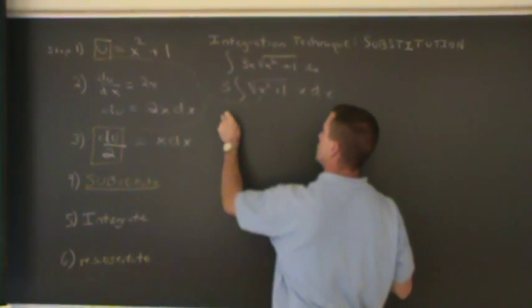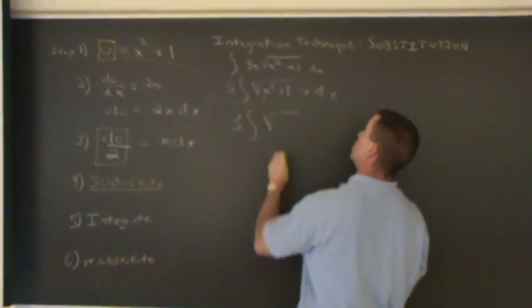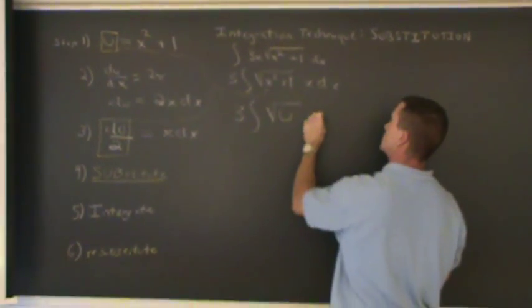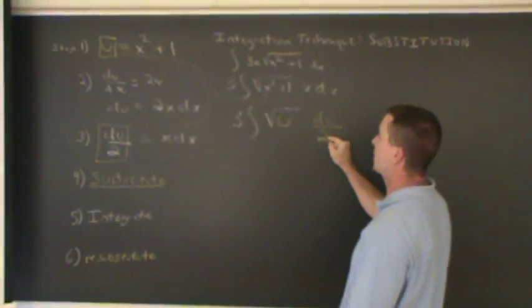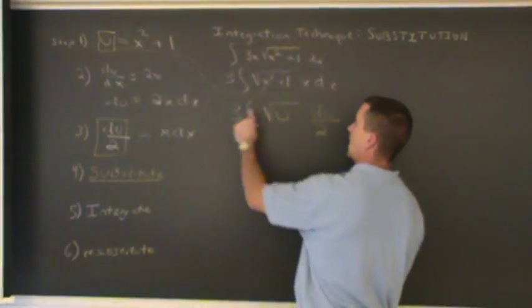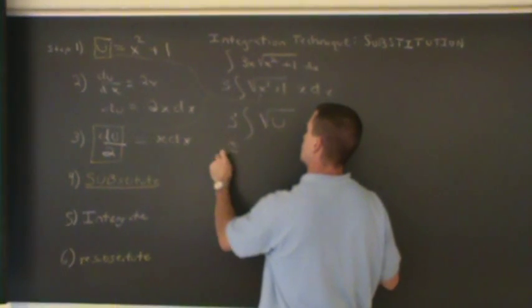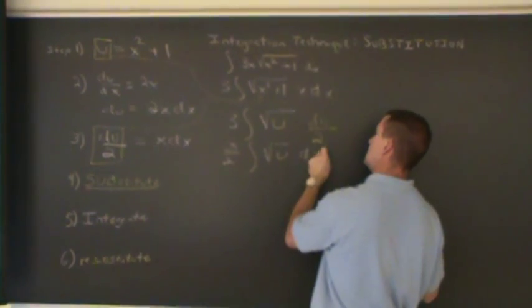And now we have three integral square root u, and we have du over 2. And this du over 2, that's just one half of du. So I can multiply one half to this three, and now I have three halves, the integral square root u, du.